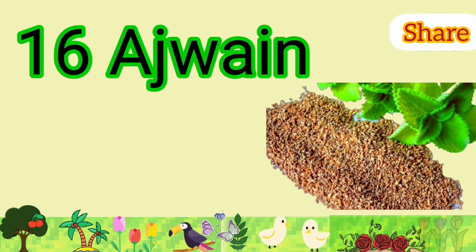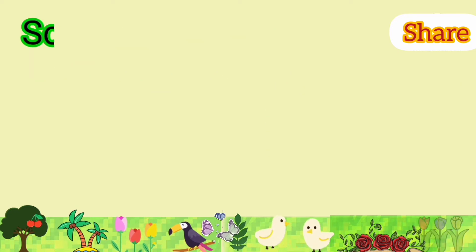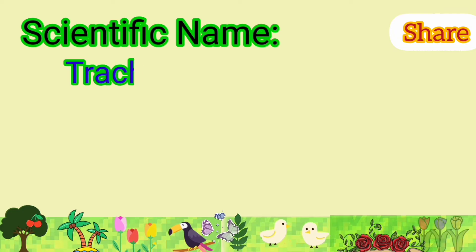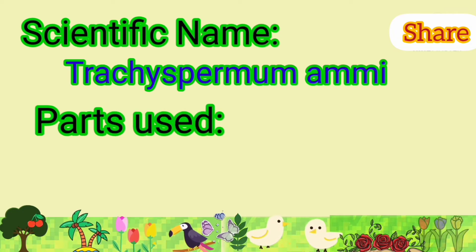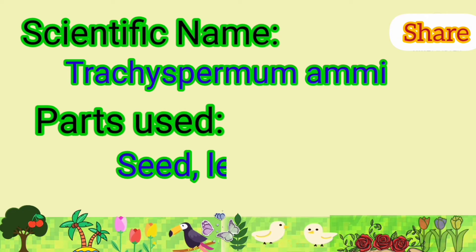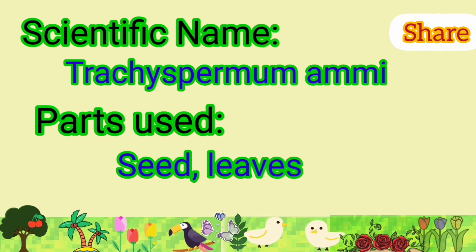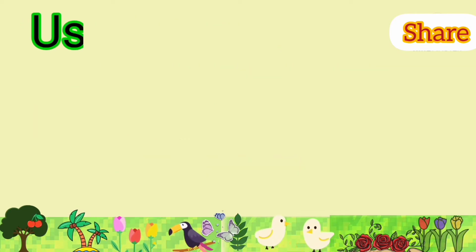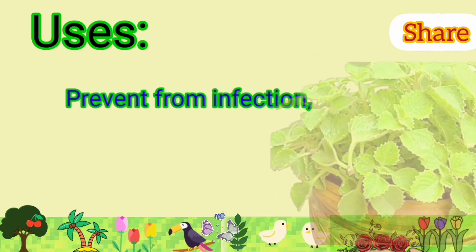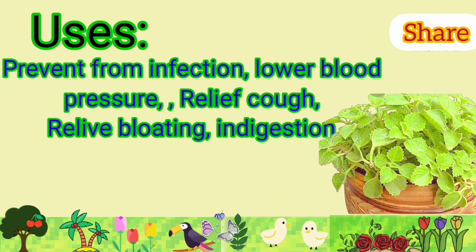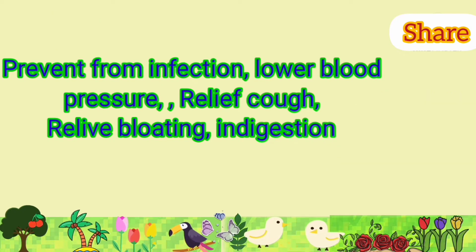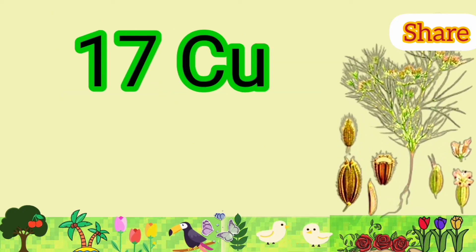Ajwain: its scientific name is Trachyspermum ammi. Parts used are seeds and leaves. It is used to prevent infection, lower blood pressure, relieve cough, relieve bloating, and indigestion.